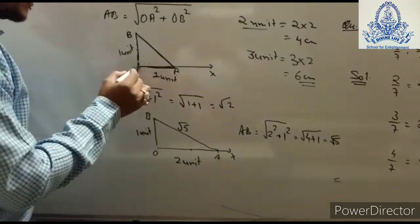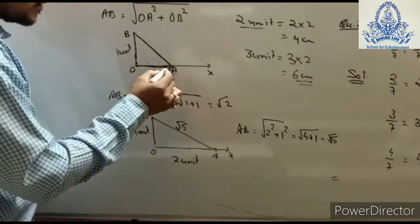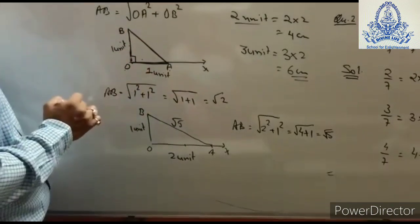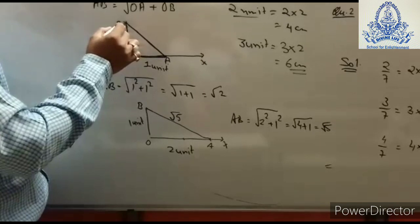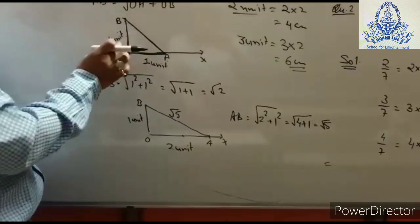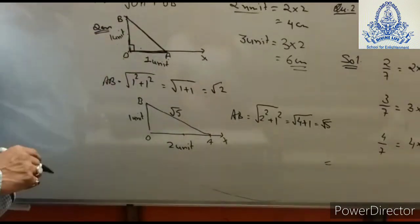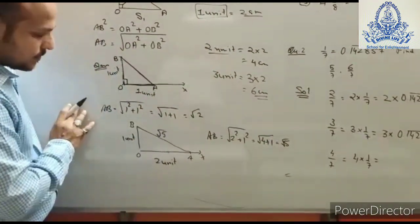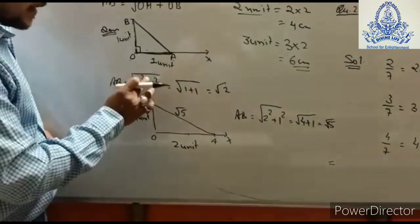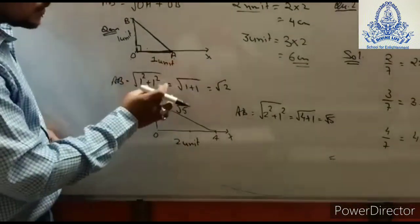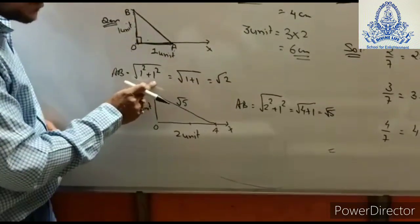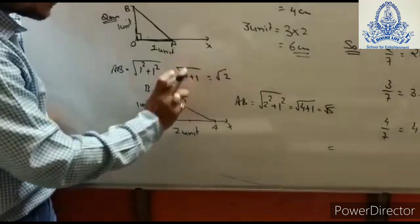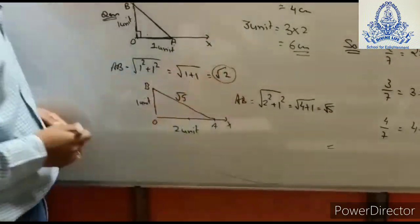First, take a ray OX where point A is two centimeters away from O, then draw a perpendicular line at O — OB is one unit, that is two centimeters. Now applying Pythagoras theorem: AB is the hypotenuse, so AB equals the whole root of side 1 squared plus side 2 squared. Side 1 is one unit (1 squared) and side 2 is also one unit (1 squared), so AB equals root of 1 plus 1, which is root 2.